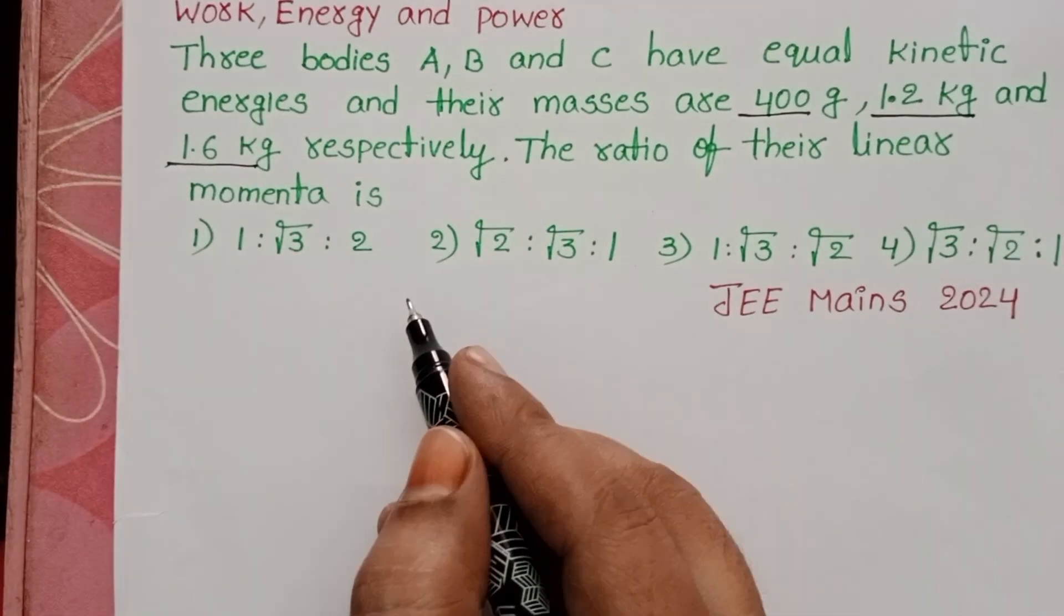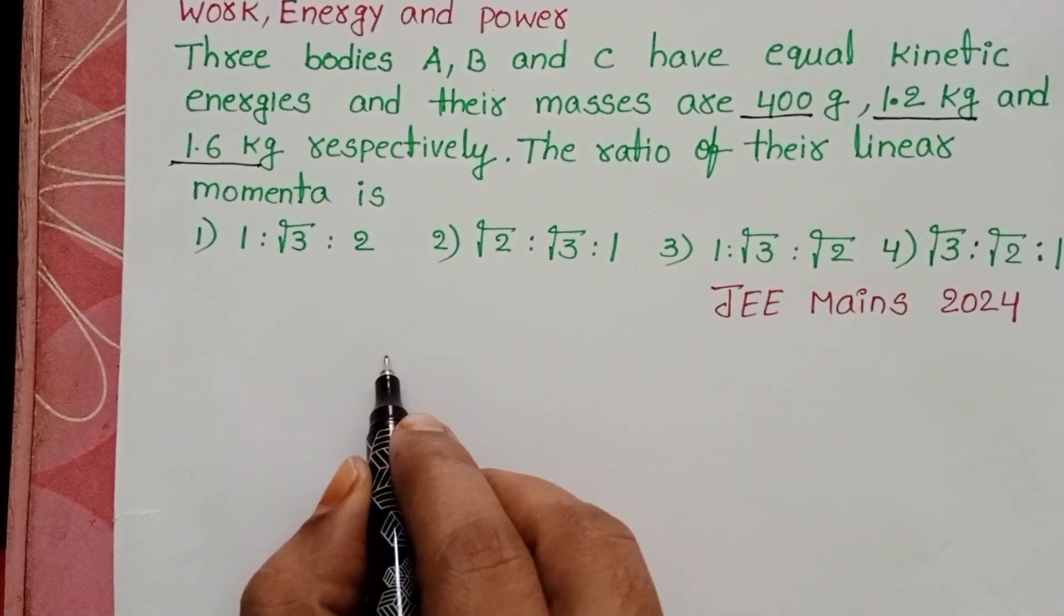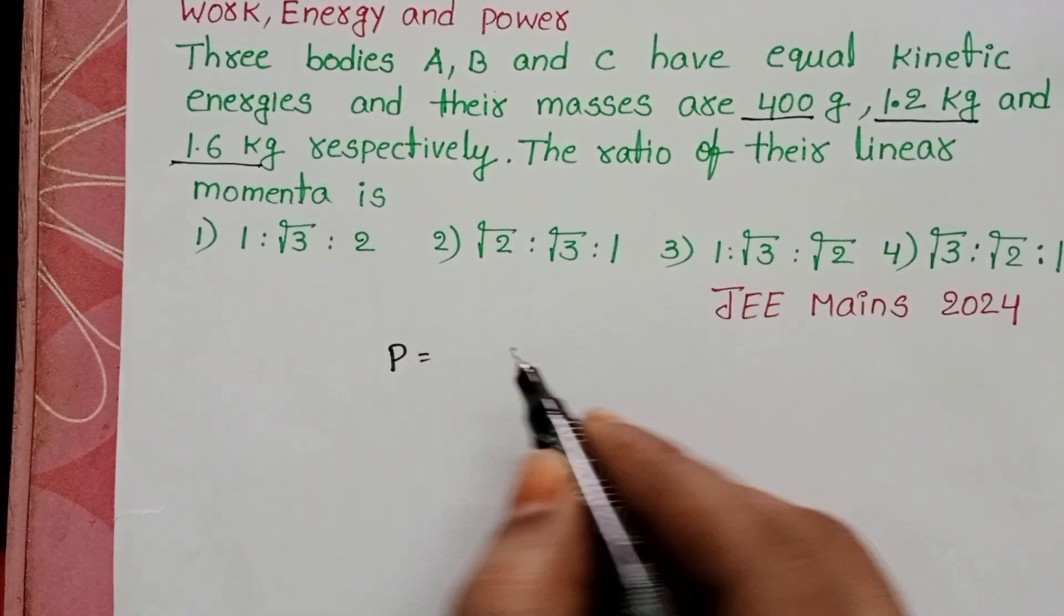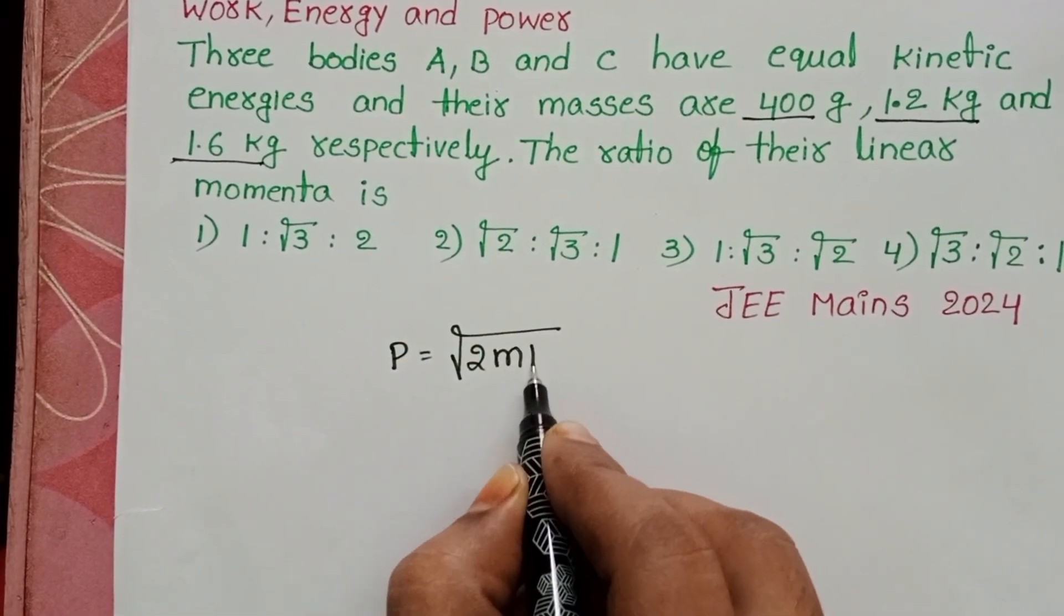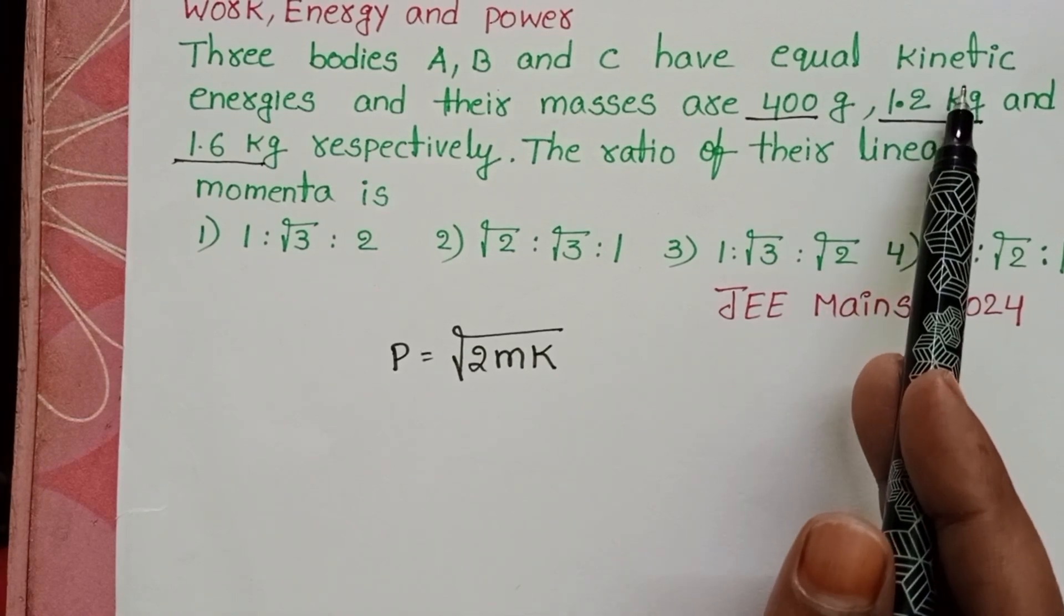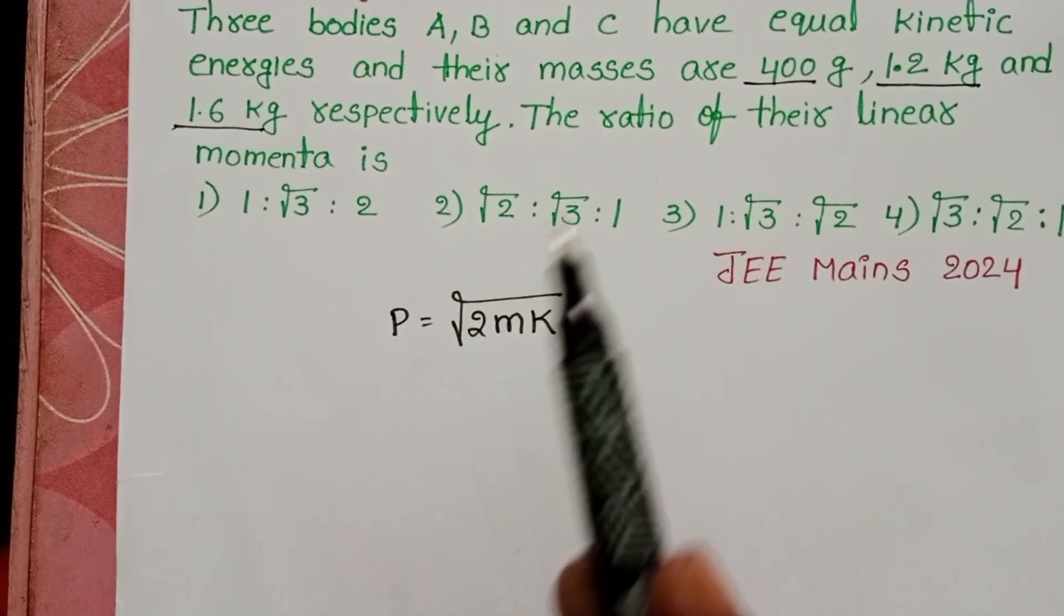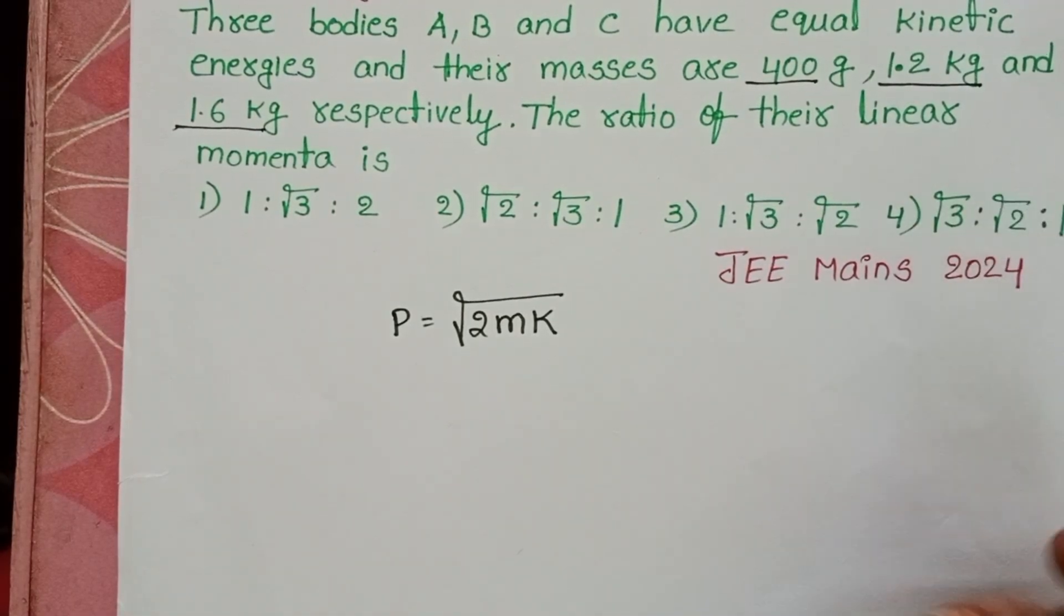We know the relation between linear momentum and kinetic energy. Linear momentum equals square root of 2mK, where K is the kinetic energy. Here, kinetic energy of the three bodies is the same. Kinetic energy is constant. By using this, we have to find out the ratio of the linear momenta.